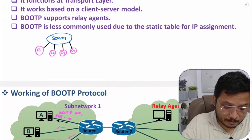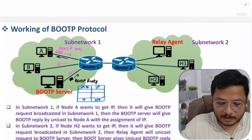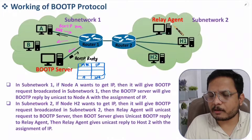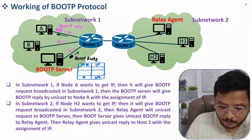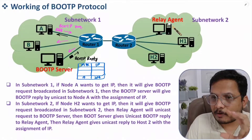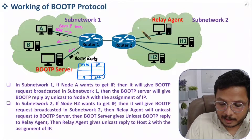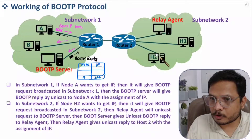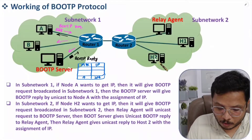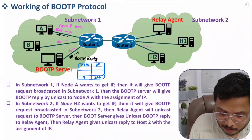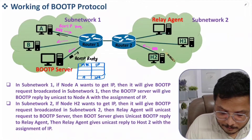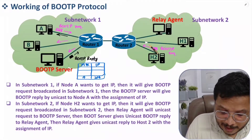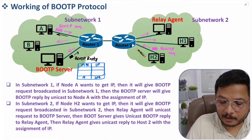BOOTP supports relay agents — let's understand how. We have multiple sub-networks in a computer network. Sub-network two has a relay agent and multiple hosts. Host 2 is a newly added host that wants an IP address. Host 2 will broadcast a BOOTP request frame over sub-network two, which goes to all hosts in that sub-network.